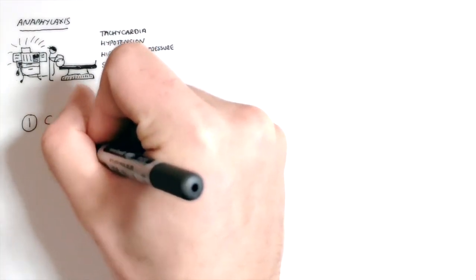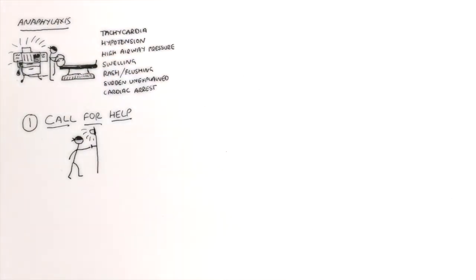The first thing you do is call for help. Ask a member of theatre staff to pull the emergency buzzer because you will need more hands on deck as soon as possible. Try and make a note of the time and ideally ask another team member to be a scribe and write down events as they occur.